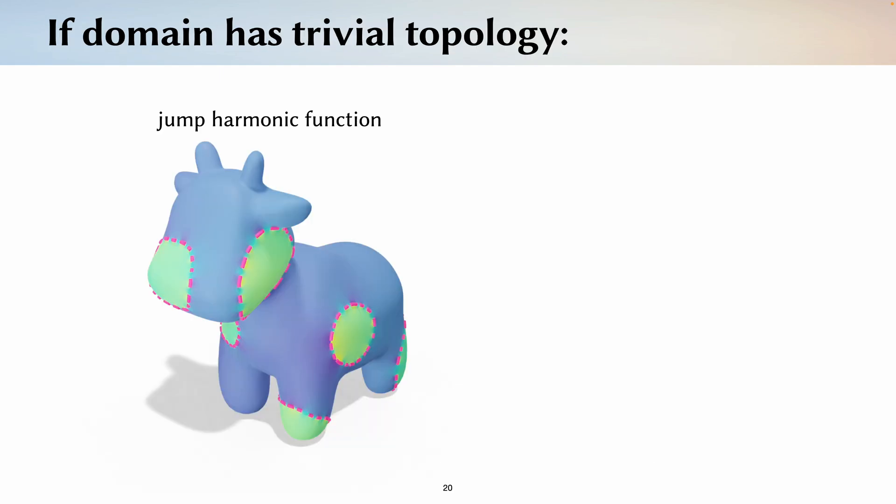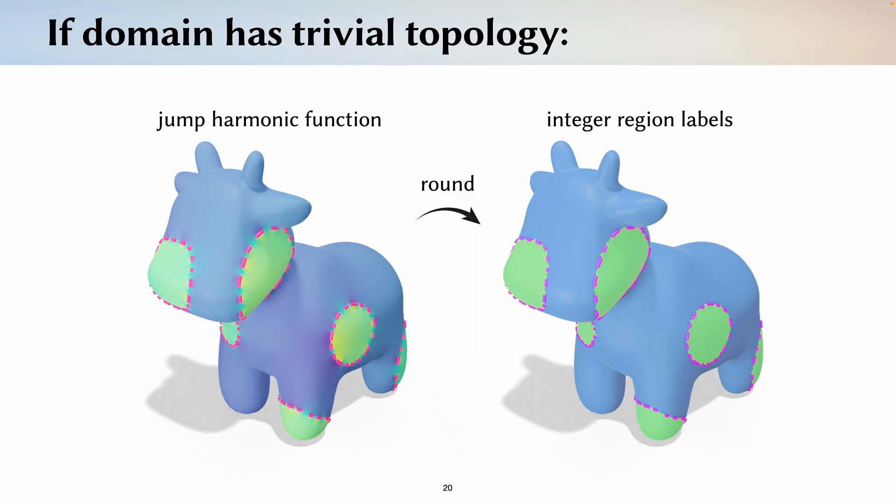If we solve the jump Laplace equation, we get a jump harmonic function. And on domains of trivial topology, we can simply round this function to get integer region labels.